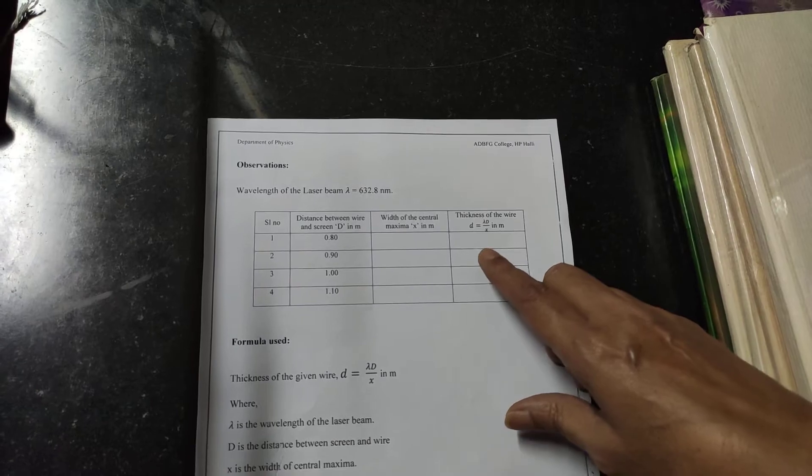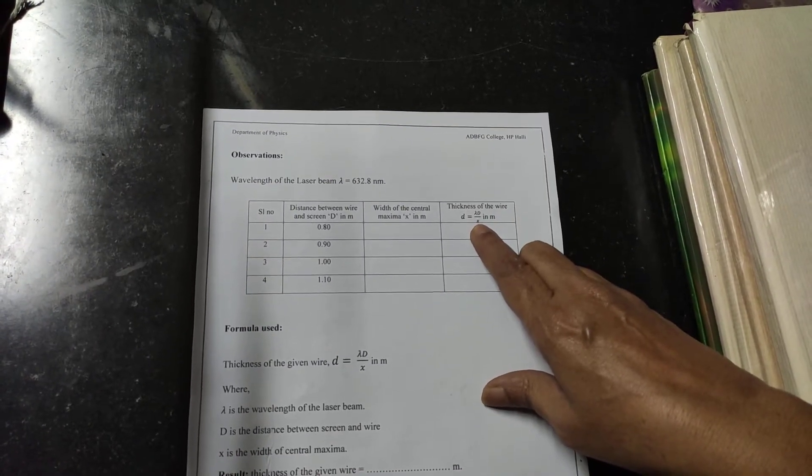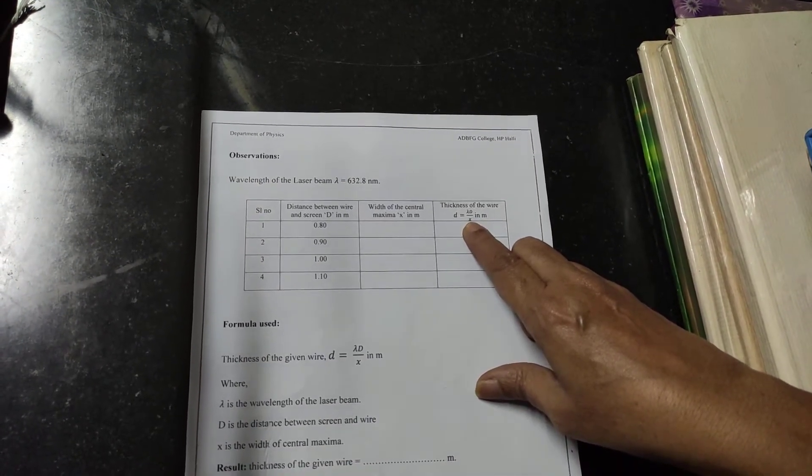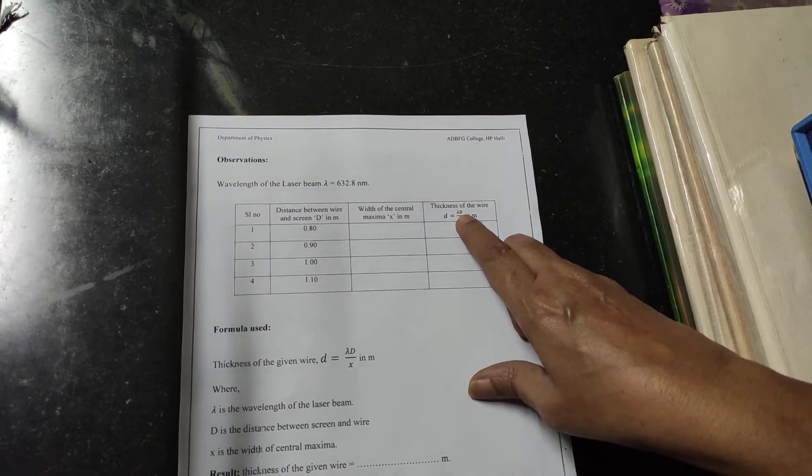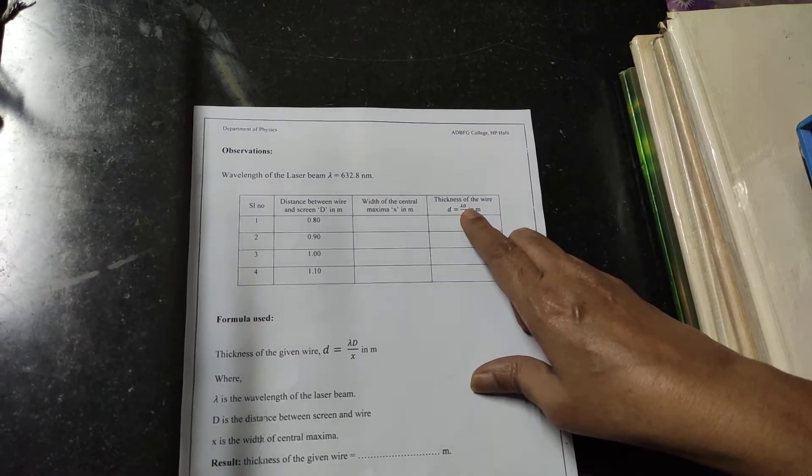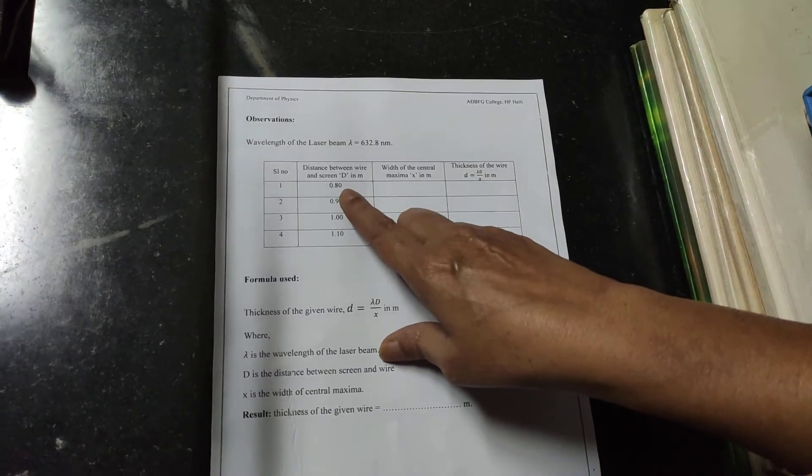The width of the central maxima is known. In the denominator this is nothing but the width of the central maxima. This capital D is nothing but the distance between the source and the screen. This value we have to substitute.